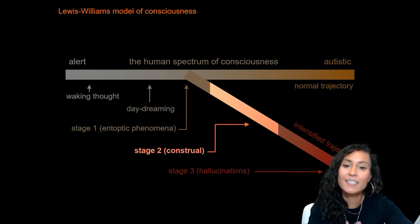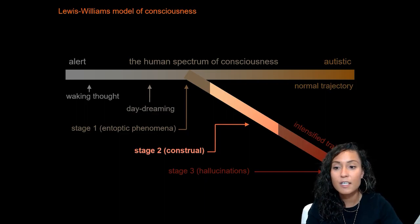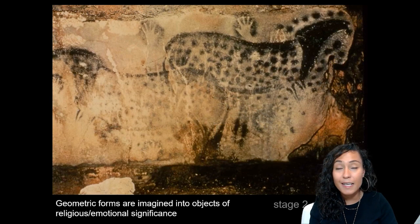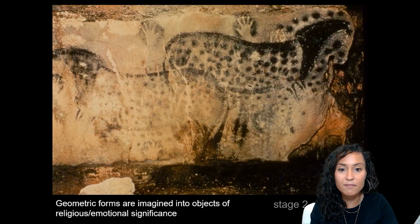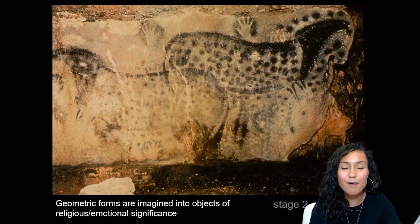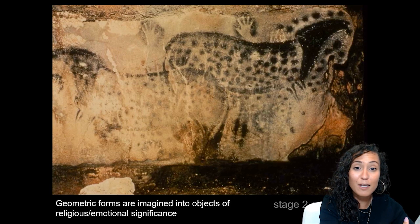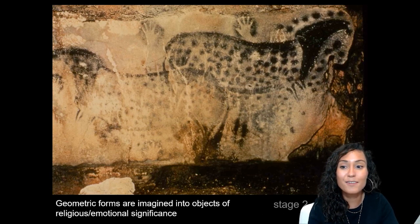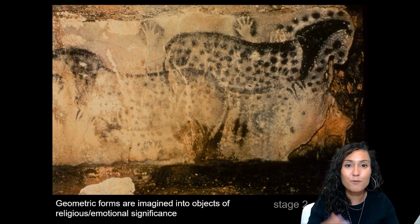Once one begins to see bright colors and abstract shapes, the individual enters phase two: construal. In construal, geometric forms are imagined into objects of emotional significance based on the individual's social, religious, and cultural beliefs. What you begin to see in stage two will totally depend on the cultural context in which you're living — San hunter-gatherers in Africa will likely see things quite different from those in the United States entering construal through oxygen and light deprivation.